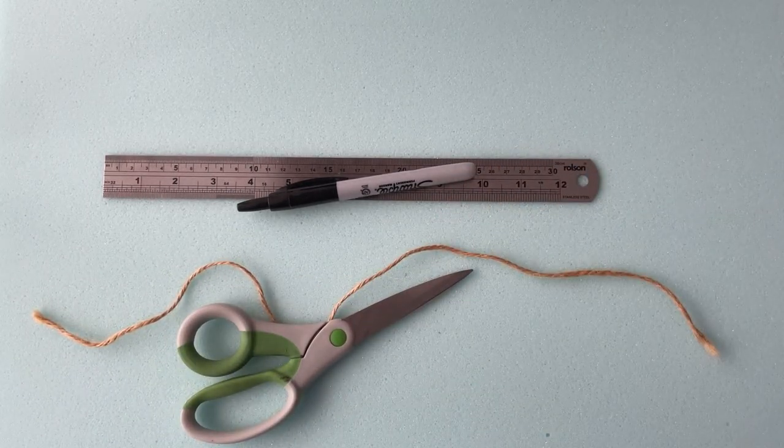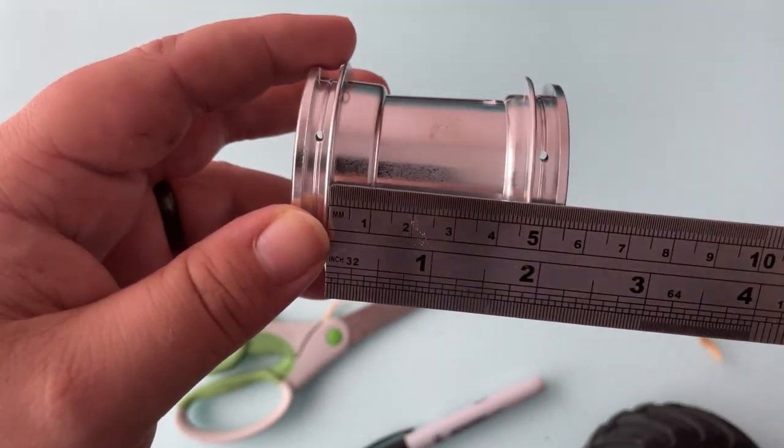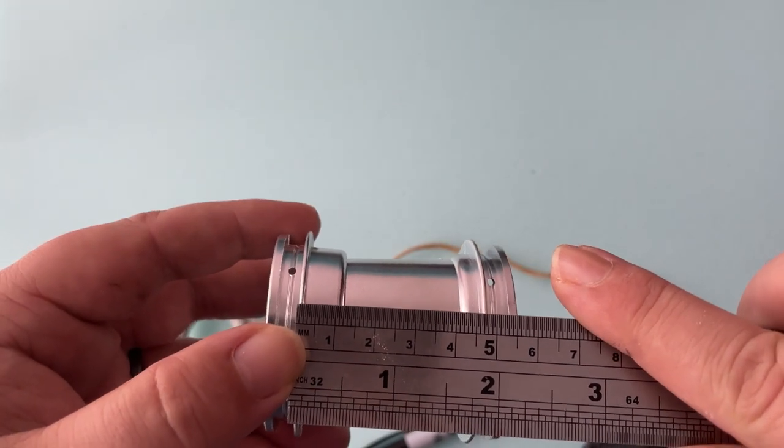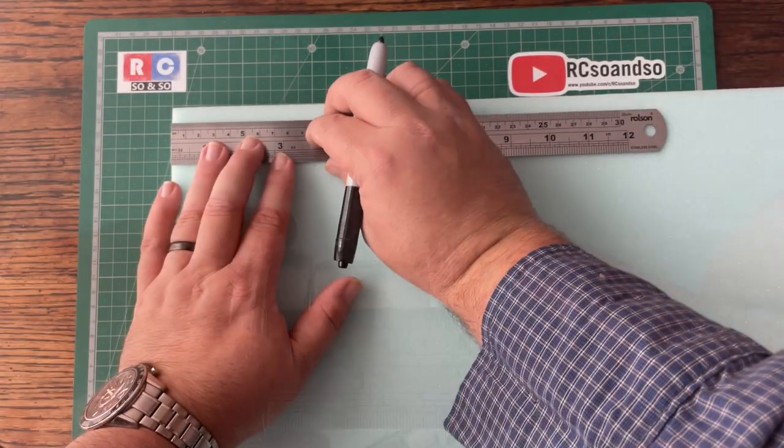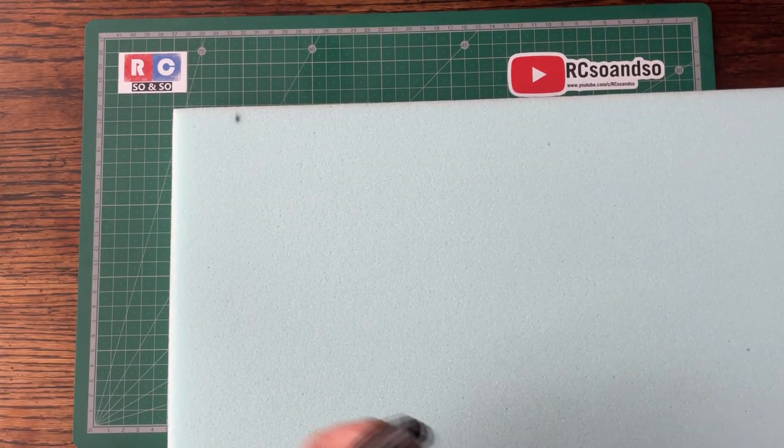Our first job is to measure the depth of the wheel so we know the width to cut it at, and we use the measurement to mark the foam. It is wise to put multiple marks down to help you cut it straight.